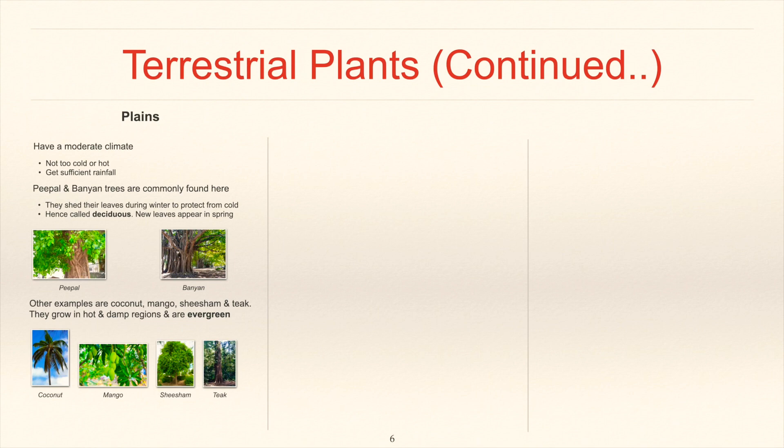Other examples are coconut, mango, shisham and teak. They grow in hot and damp regions and are evergreen. You might be quite familiar with all these plants.